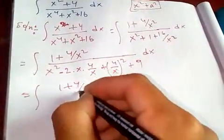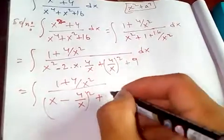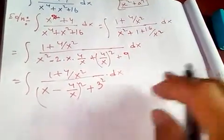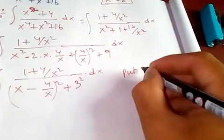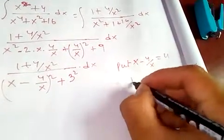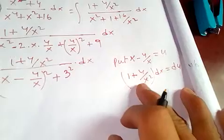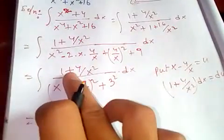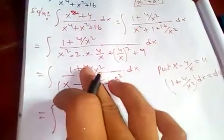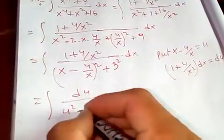So the integral becomes: (1 + 4/x²) divided by [(x - 4/x)² + 9] dx, which is (a - b)² form plus 3². Now we use substitution: let u = x - 4/x. Differentiating, (1 + 4/x²) dx = du. So the integral reduces to du over (u² + 3²).